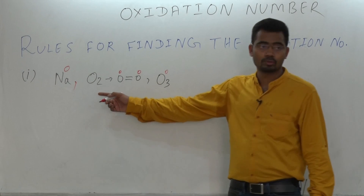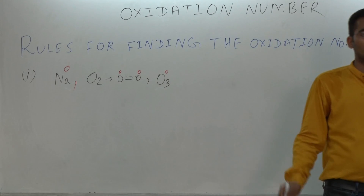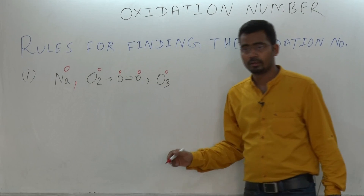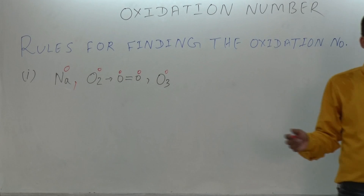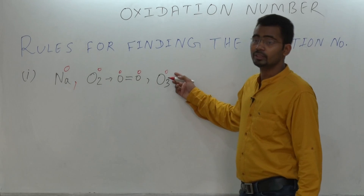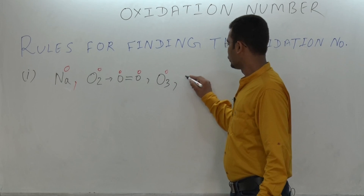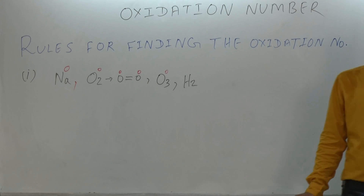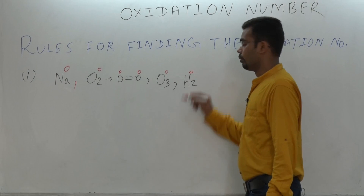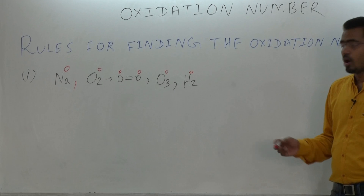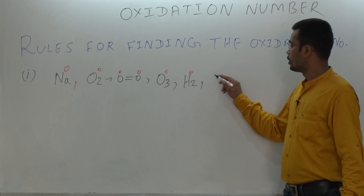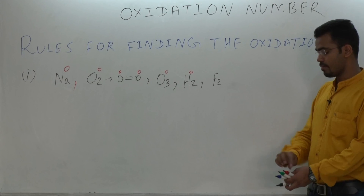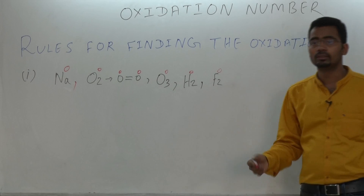For O2, oxygen is combined with other oxygen — that is the same element — therefore the oxidation state of oxygen is zero. O3: oxygen is combined with other oxygen, same element, so oxidation state is zero. All halogens: for example F2 — what is the oxidation state? Zero. Because one fluorine is combined with another fluorine.